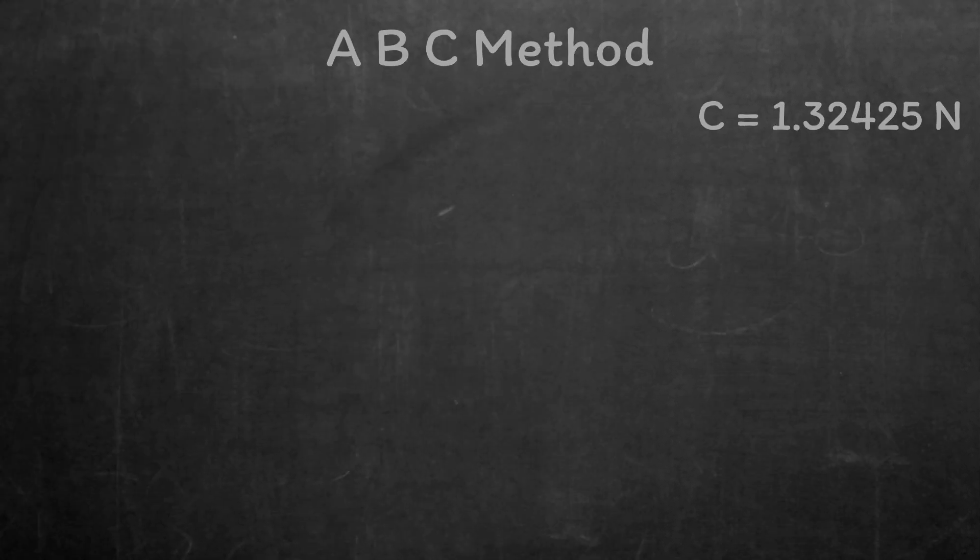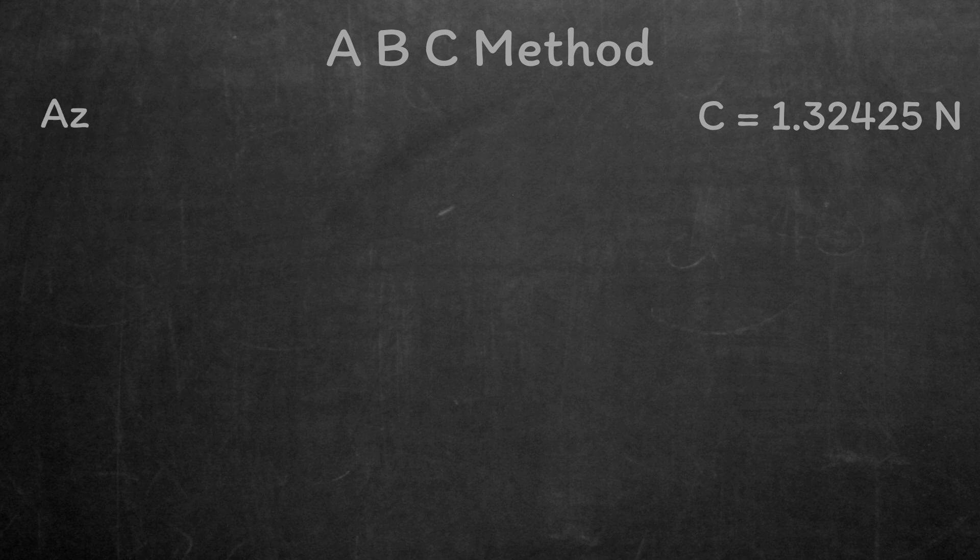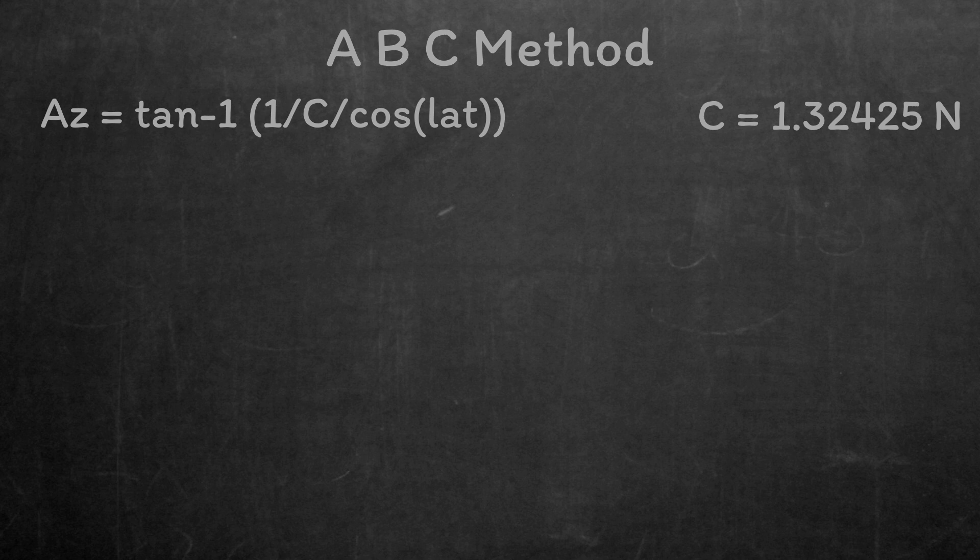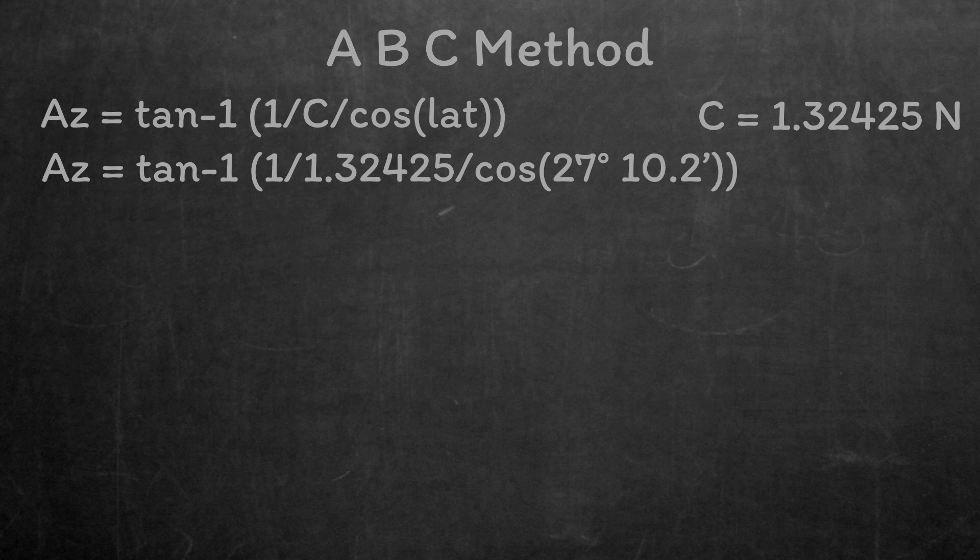Finally, we can use C to find the azimuth. Again, you could use the C table in Norris. Azimuth equals the inverse tan of 1 divided by C divided by cos lat. Make sure you just put it through the calculator as it is, all at once, to maintain the accuracy. So I'm going to type 1 divided by 1.32425 divided by cos of 27 degrees, 10.2 minutes. And then I'm going to inverse tan the result, and I get 40.3 degrees.